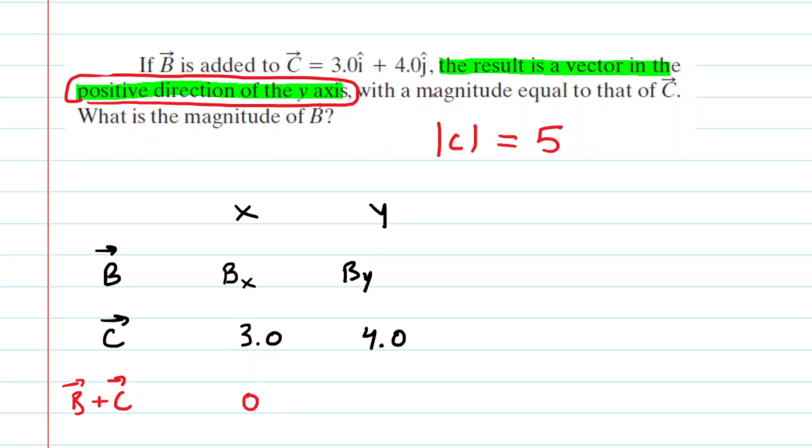And we also know that the sum of vectors B plus C will have a magnitude equal to that of C. So what does that mean? Well it means that since the x components are going to completely cancel out and go to zero, that means that the total y component has to equal 5, because the only component that's left over is going to be that y component. So the sum has to equal 5 which was the magnitude of C.